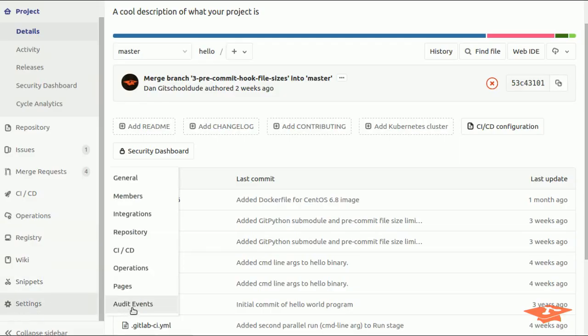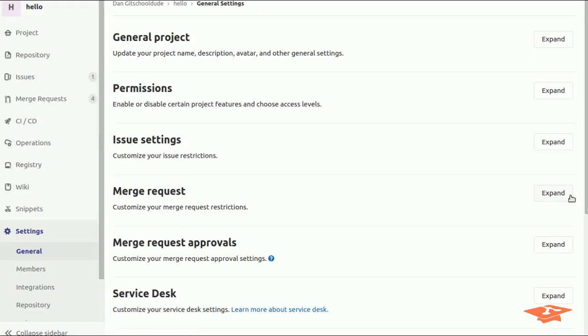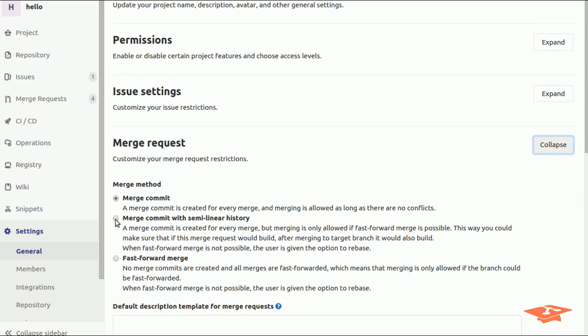If you've ever scrolled through all the settings in your project, you may have noticed that there is a section called merge request where you can select one of three merge methods. Today I'm going to explain what all three of these methods are by showing you visually how they affect the commit tree.